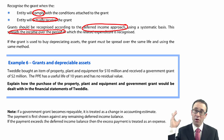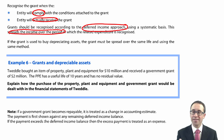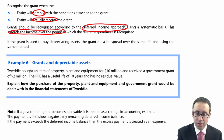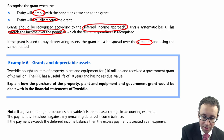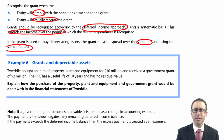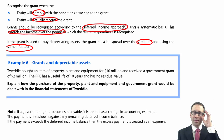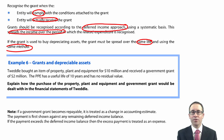Once you've got that, the likelihood is that you are going to use the deferred income approach. So you debit the bank and credit deferred income as a liability. Then you spread the income over the period in which the expenditure is recognised. If it is a capital grant for the purchase of PPE, then you spread it over the depreciable life of the asset. Don't apply different lives or different methods to depreciation and the release of the deferred income.